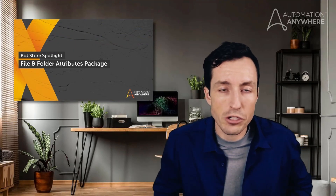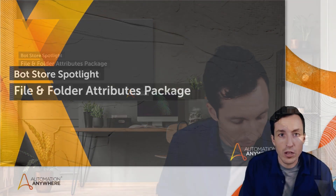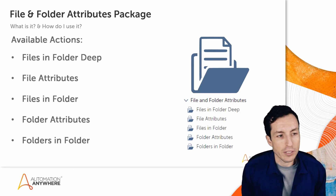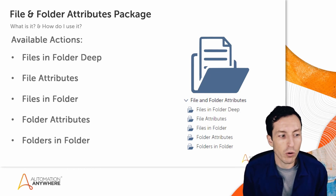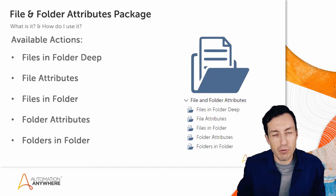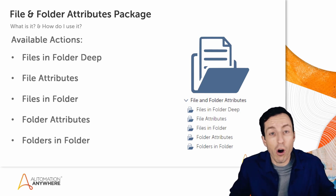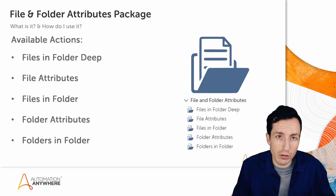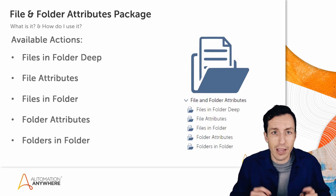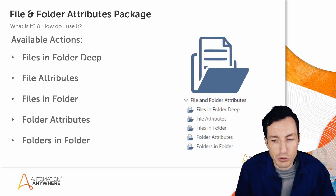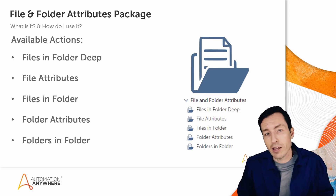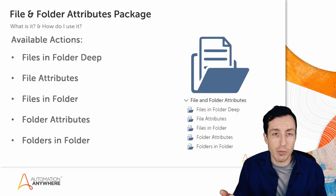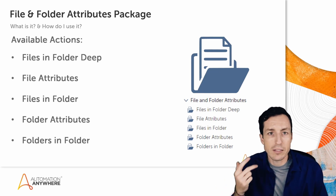In this session we're going to look specifically at the File and Folder Attributes package. There are five total actions: Files in Folder Deep, File Attributes, Files in Folder, Folder Attributes, and Folders in Folder. Files in Folder Deep shows all files and folders within a directory including all subdirectories. File Attributes shows lots of different attributes about a specific file — for a PDF it'll show you the number of pages, size, width, height, last accessed time, modified time, full file size, and extension.